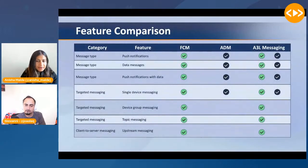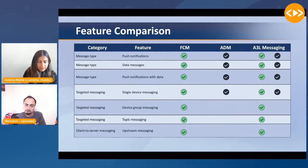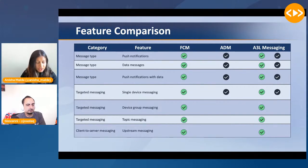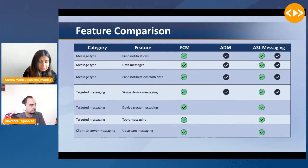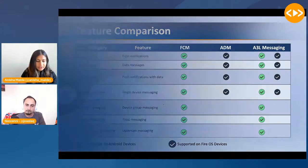Let's look at the features offered by FCM, ADM, and A3L. The green shows features supported by Android devices and black shows features supported by Fire OS devices. FCM supports a range of them; ADM supports the ones specific to Amazon devices — push notifications, data messages, push notifications with data, and single device messaging. However, the A3L SDK supports all the FCM ones and the ADM ones together. For example, you can send push notifications to engage with users or send custom data messages, just as you would integrating with these two separately.